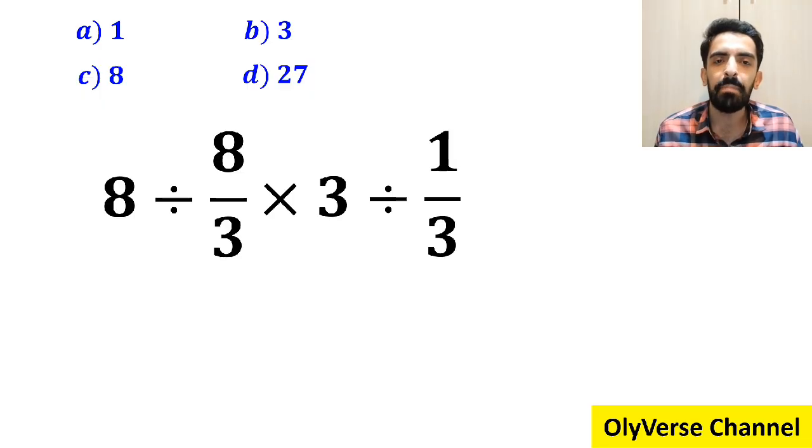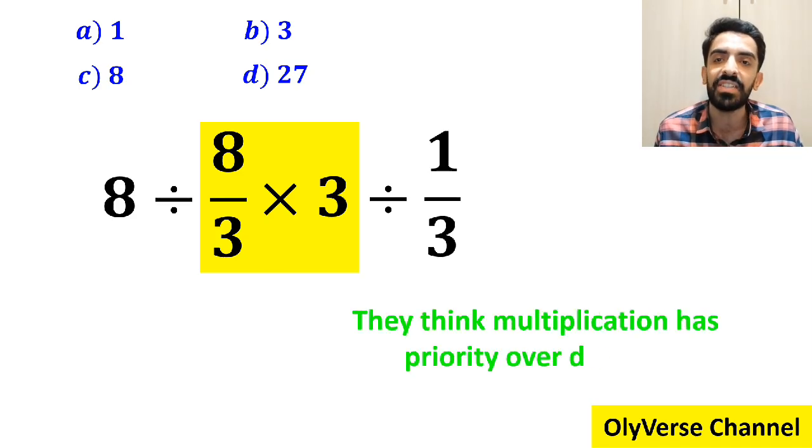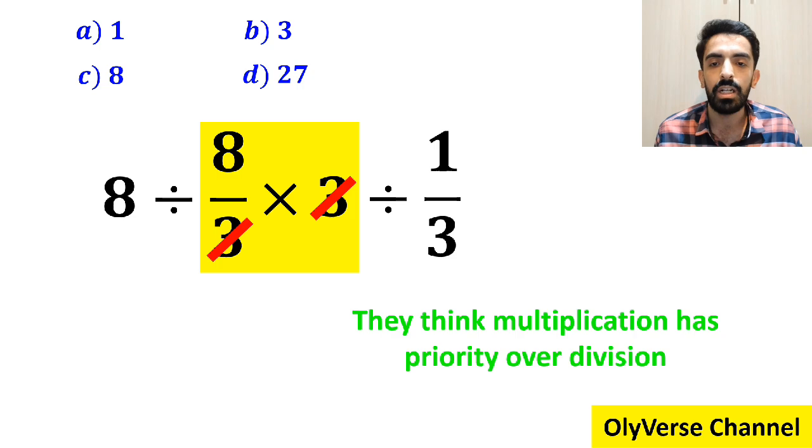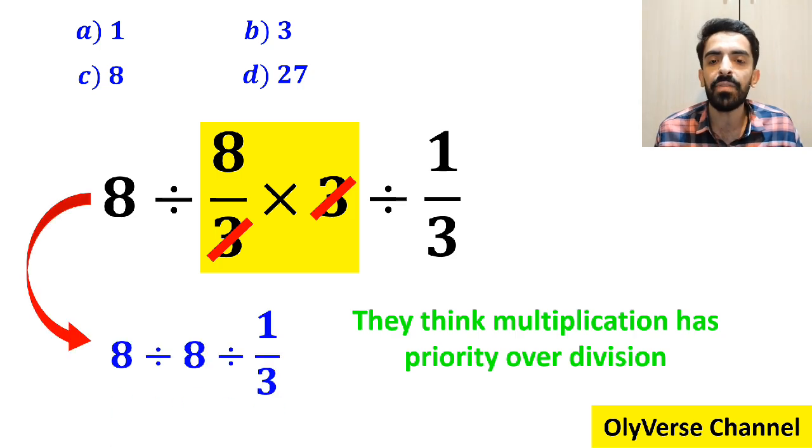In the first step, many people go straight to the expression 8 over 3 times 3 because they think multiplication has priority over division, and they tend to cancel out the threes. So this expression simplifies to 8 divided by 8 then divided by 1 over 3.